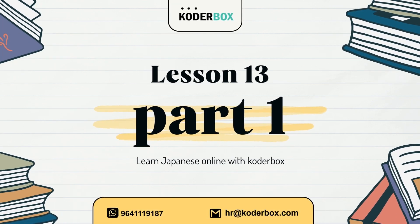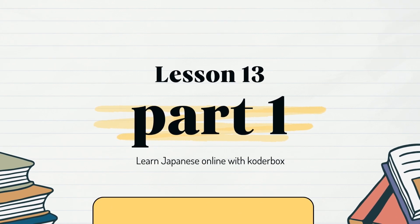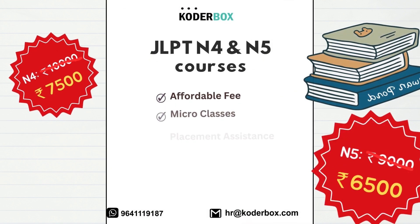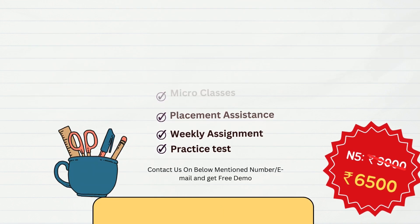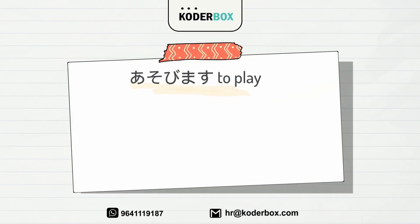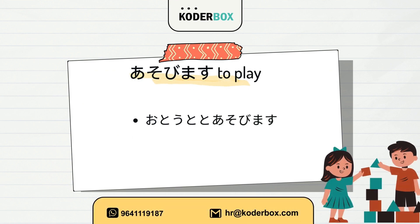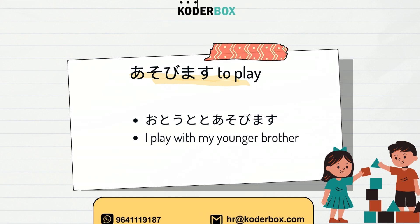Lesson 13 Part 1. Vocab. First, asobimasu — to play. Otooto to asobimasu. I play with my younger brother.